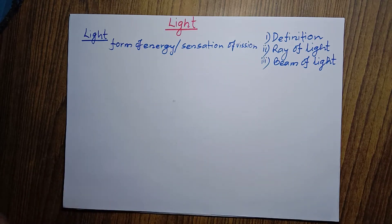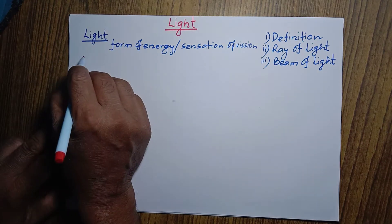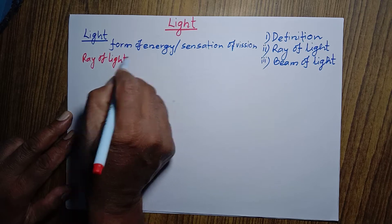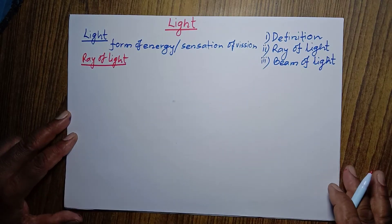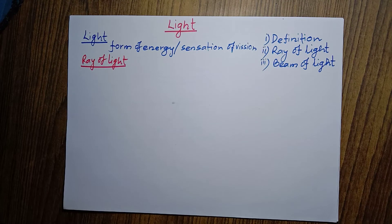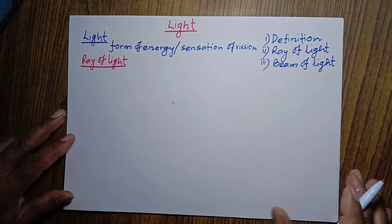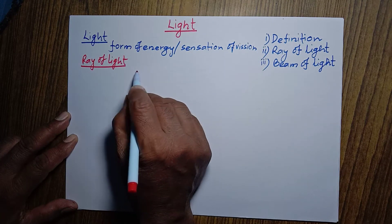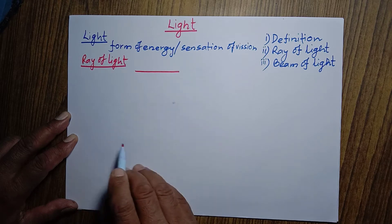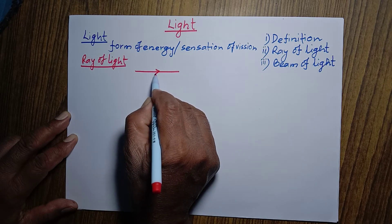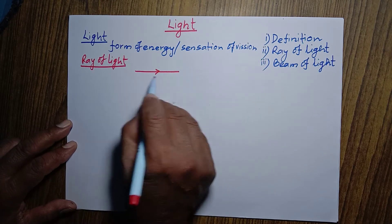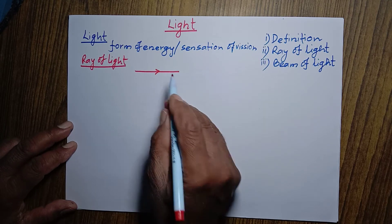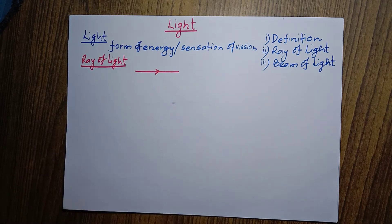Now let's talk about ray of light. Ray of light means the smallest path along which light travels. This smallest path is taken as a straight line, and the direction is shown with the help of an arrow mark. This is the representation of a ray of light — the smallest path along which light can travel.